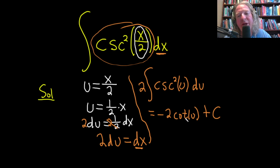And you can check this. The derivative of cotangent is negative cosecant squared. There's already a negative here, so it'll become positive. We're not done, though, because we still have a u here in the problem.